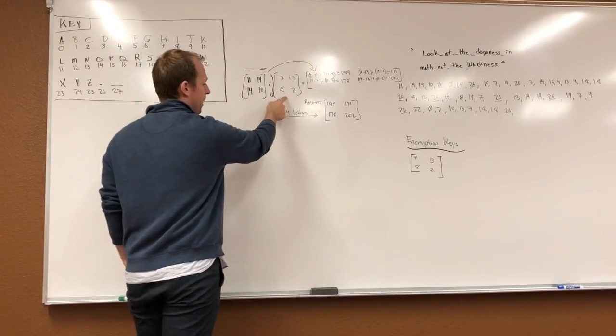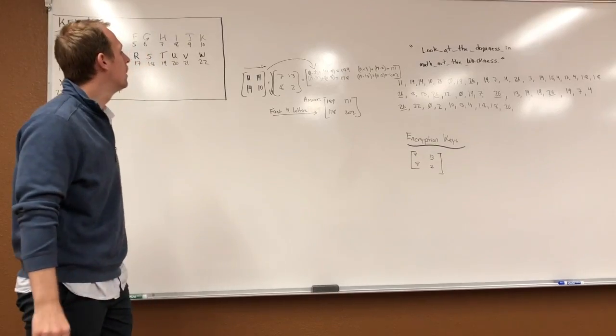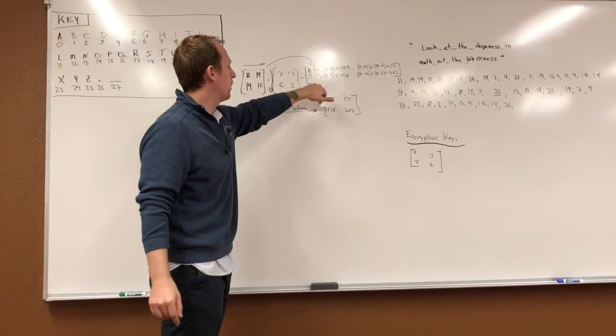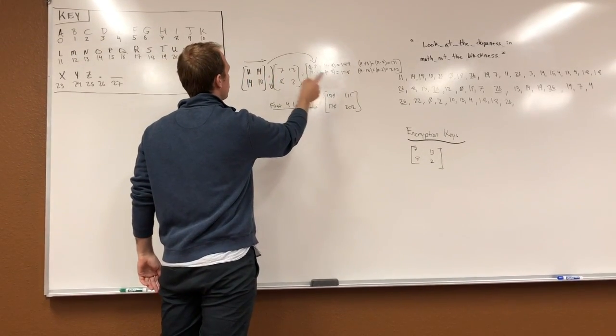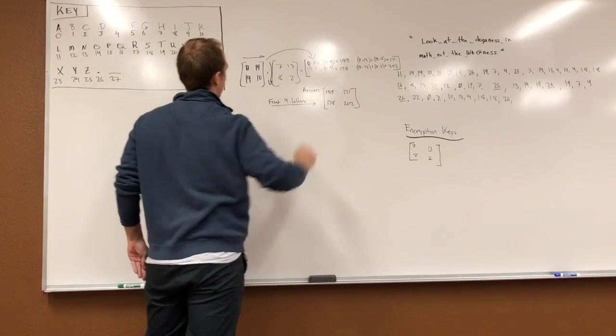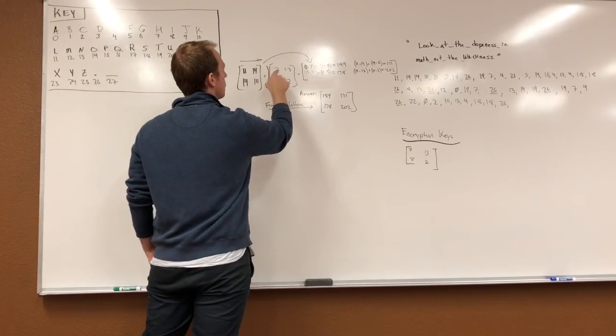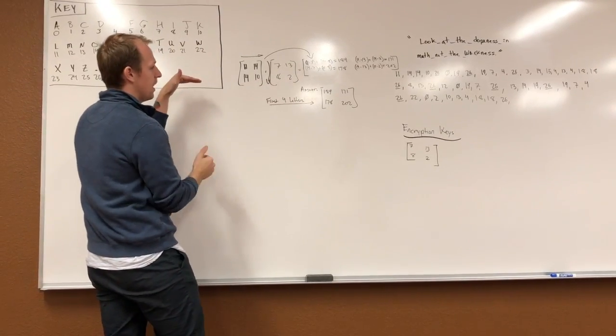We multiply it by our key. So here's our random encryption key: 7, 13, 8, 2. And you go across and down. So if you look over here at the math, 11 times 7 plus 14 times 8, we get 189. And then we go 14 times 7, 10 times 8, still going across and down.